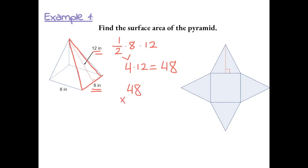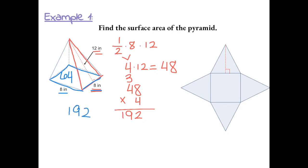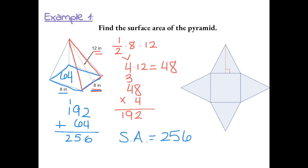Forty-eight times four gives us the total area of all four triangles, which is one hundred and ninety-two. Now we have to find the area of the base of the pyramid, which has dimensions eight by eight, so that has an area of sixty-four. To find the total surface area, we add one hundred ninety-two and sixty-four, giving us two hundred and fifty-six inches squared.